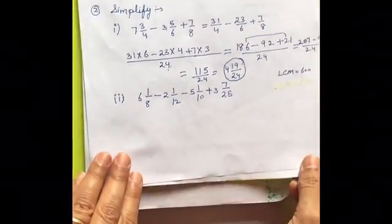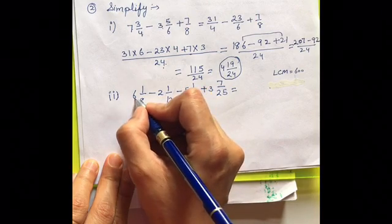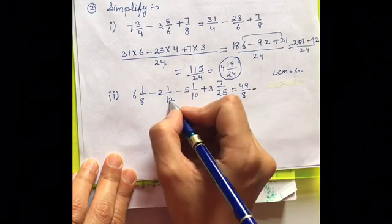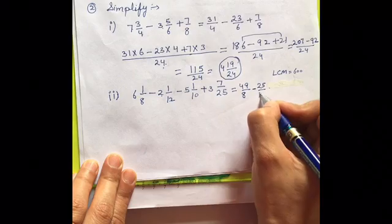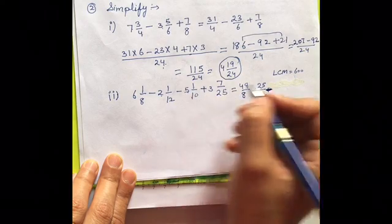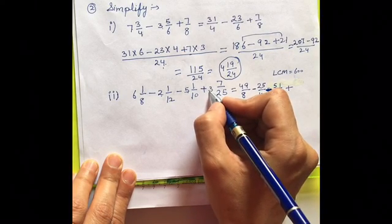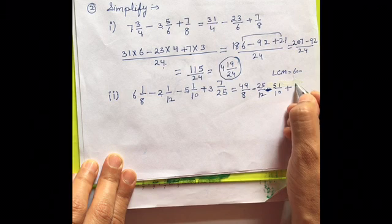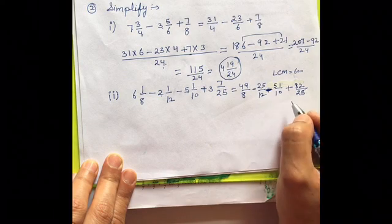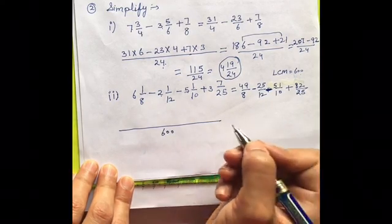Now, the last part is this. Seems to be quite lengthy, but it is not that. So, 8 6 is 48 plus 1 is 49 upon 8 minus 12 2 is 24 plus 1 is 25 upon 12 plus. Oh, it was minus 50 plus 1 is 51 upon 10. Then, then we have plus 25, 75. 75 plus 7 is 82 upon 25. So, now, you will have to take the LCM. The LCM here in this case is 600. So, 600 is my LCM.